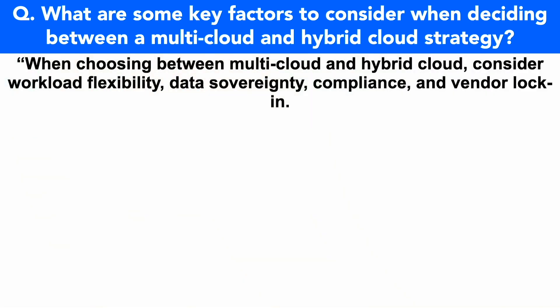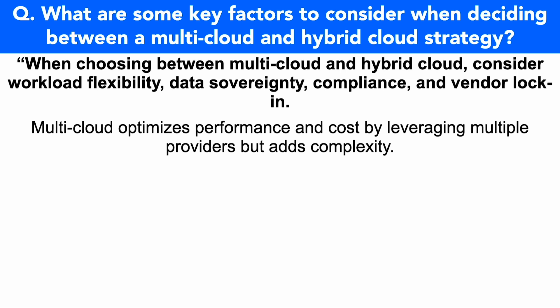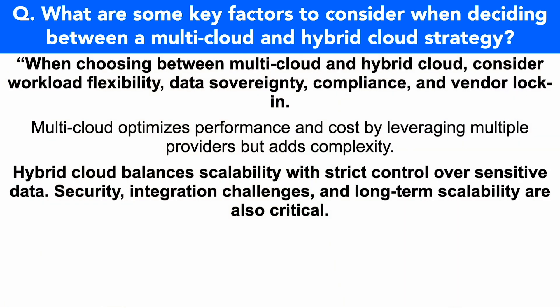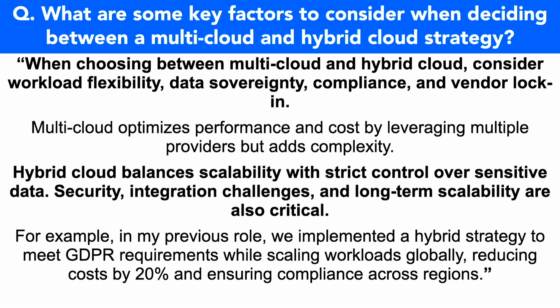When choosing between multi-cloud and hybrid cloud, consider workload flexibility, data sovereignty, compliance and vendor lock-in. Multi-cloud optimizes performance and cost by leveraging multiple providers but adds complexity. Hybrid cloud balances scalability with strict control over sensitive data. Security, integration challenges and long-term scalability are also critical. For example, in my previous role we implemented a hybrid strategy to meet GDPR requirements while scaling workloads globally, reducing costs by 20% and ensuring compliance across regions.